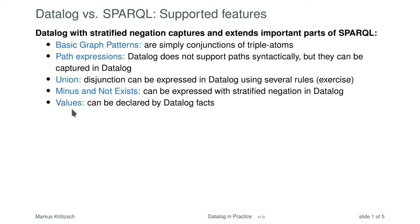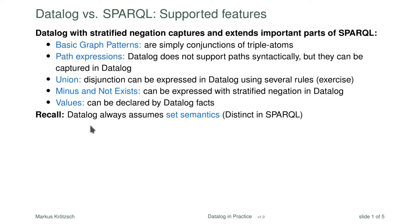Path expressions may require some more explanation, so I will show an example. With all of these features, we should recall that Datalog always assumes set semantics, meaning we cannot have duplicates — the same as using DISTINCT everywhere in SPARQL. If you don't want that, Datalog is not what you are looking for, because there is no practically feasible semantics that does duplicate counting and allows arbitrary recursion through rules. With recursion there can be infinitely many different reasons for why something is derived, so eliminating duplicates is something you almost certainly want in a recursive rule language like Datalog.